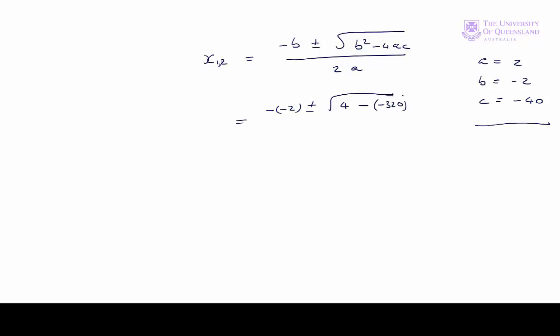That's equal to 4 plus or minus the square root of 324 over 4. That's equal to 4 plus or minus 18 over 4.